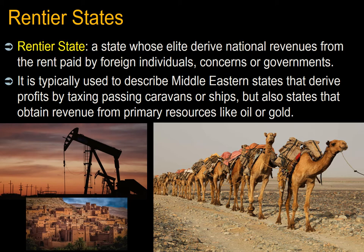A second type of state is the rentier state — a state whose elite derive national revenues from rent paid by foreign individuals, concerns, or governments. It is typically used to describe historical Middle Eastern states that derive profits by taxing passing caravans or ships, but also those states that obtain revenue from primary resources like oil or gold. A consequence of rentier states is that they have little incentive to develop their own population socioeconomically, and instead buy off population consent with benefits, often relying on foreign labor for economic extraction tasks.